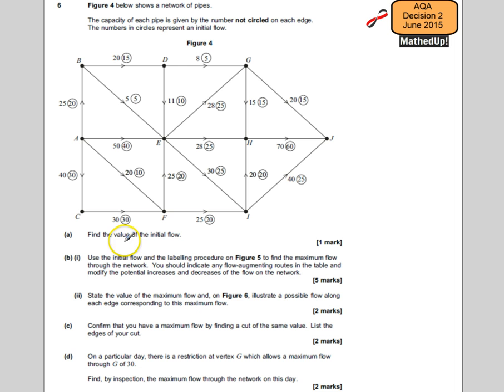For part A we're finding the value of the initial flow. So we want to see initially what's going into the system and therefore what's coming out. Our source is A and A has 20, 40, 10, and 30 flowing through. So 20 plus 40 is 40, plus 10 is 70, plus 30 is 100.